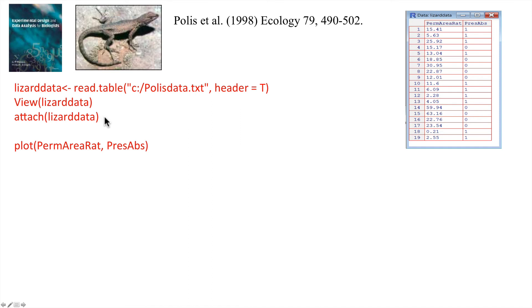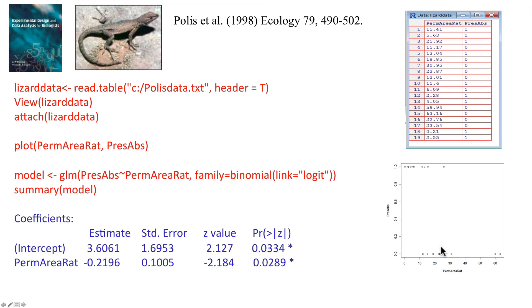Next, I'm going to attach these data so that I can refer directly to the variables within the data frame. Of course, the first step in any statistical analysis should be to visualize your data. Here I'm plotting a graph of the perimeter-to-area ratio against the presence or absence of lizards. Eyeballing these data, it really does appear that islands with small perimeter-to-area ratios tend to have lizards, and yet those with relatively large perimeter-to-area ratios do not tend to have lizards of this type.